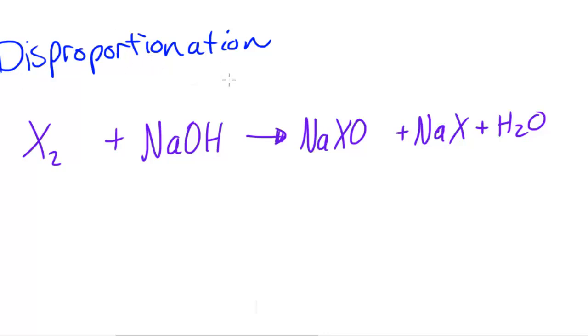Now disproportionation, this word is used to describe a reaction in which an element is both oxidized and reduced. We're not talking about redox where one element is being oxidized while a different element is being reduced. What we're talking about is the same element is being oxidized and reduced.